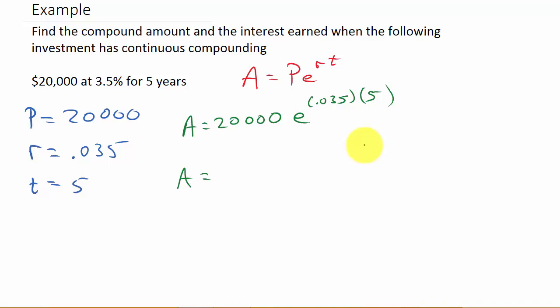It might have that little exponent thing on there, too. And the parenthesis pops up. So, type in 0.035 times 5. And then close the parenthesis. And then hit enter.